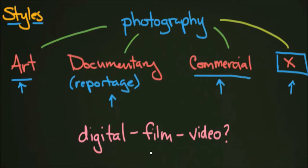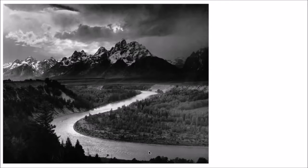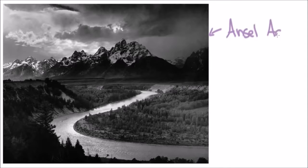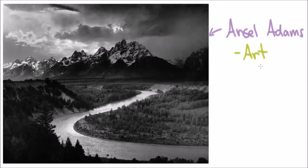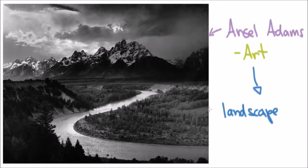Let's look at some examples. Here we have Ansel Adams, an American photographer who worked in the 20th century. Ansel Adams is your quintessential landscape photographer, and he was shooting in the style of an art photographer. He occasionally did commercial work, but in general he was a landscape photographer working as an art photographer — landscape was his specialty.